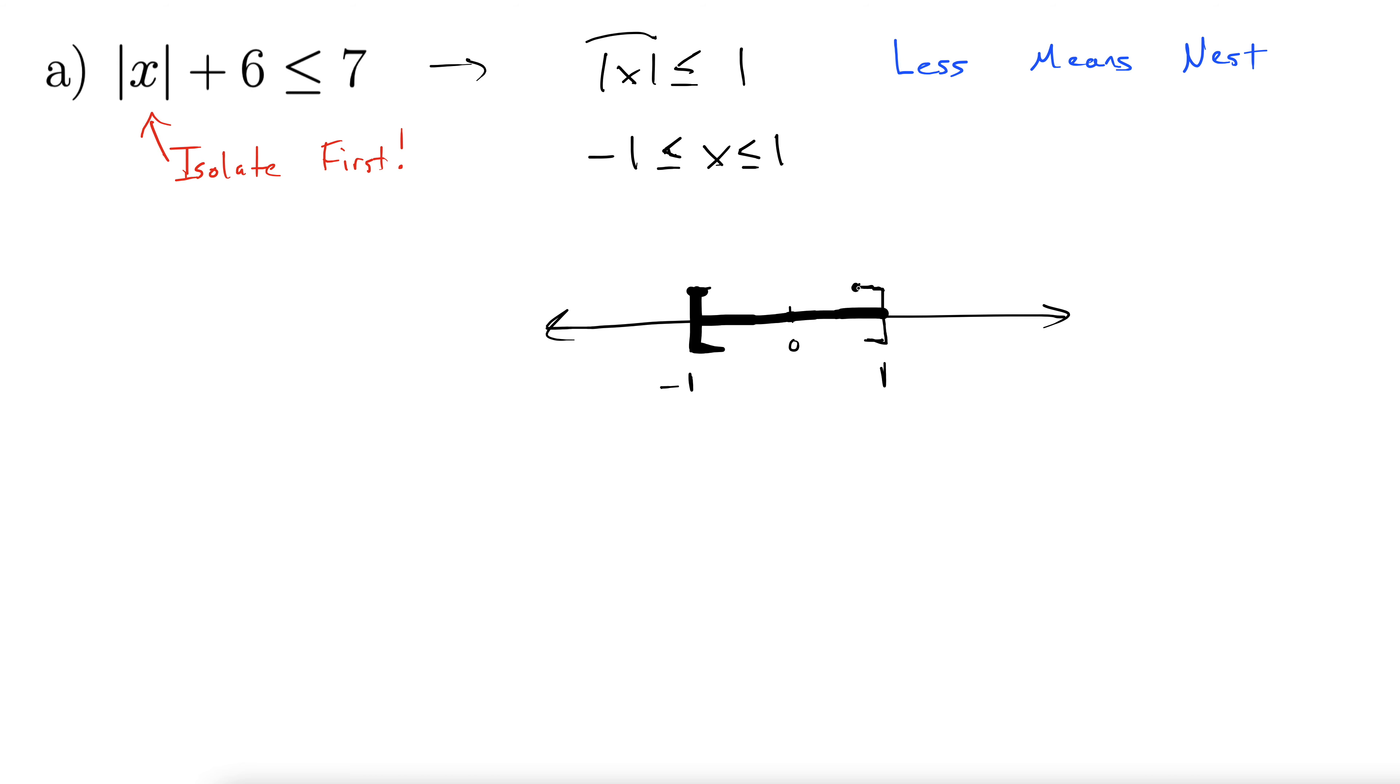Okay, get the idea. And then our interval notation just follows that. And again, the less means nest. It's kind of nest-esque, right? It looks kind of like a nest, I guess.